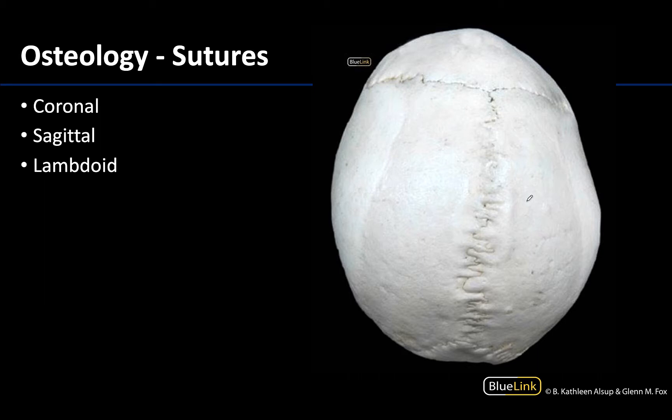My first recommendation for any time you look at an image, particularly in an assessment situation like the practical, is to try to figure out what view you are looking at. So here we are looking at a superior view, or the top of the skull. This is going to be anterior, and this will be posterior. When trying to better identify osteological structures, I like to identify which bones I can actually see before breaking down the structures.